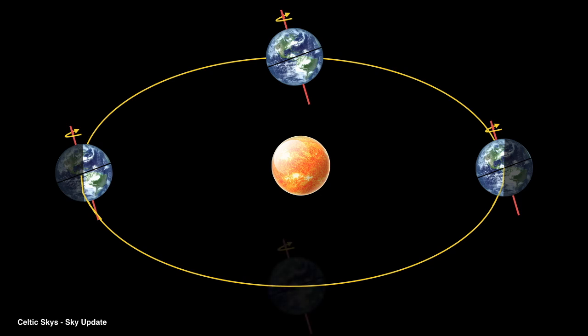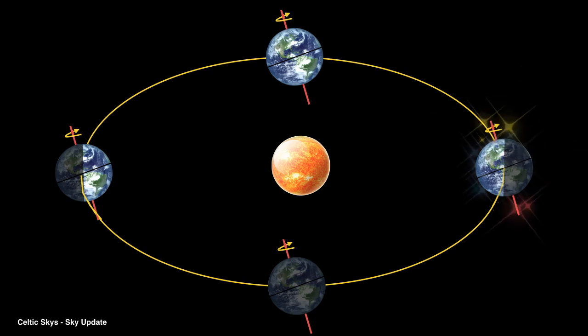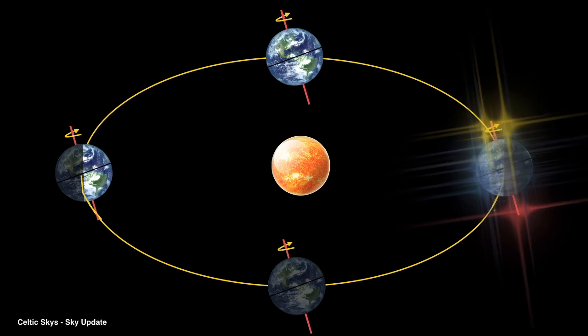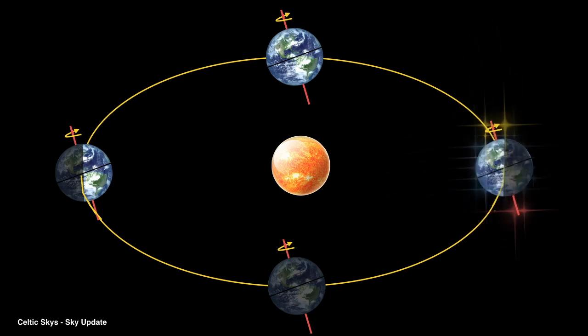it's often either tilted towards the Sun or tilted away from the Sun, depending on its location in its orbit. And this tilt towards or away from the Sun has a significant impact on the climate of the planet.